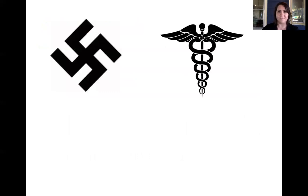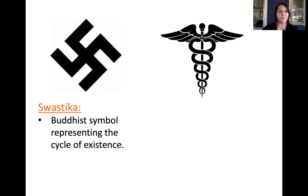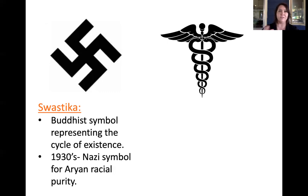Here are two symbols to illustrate what cultural context is — you may recognize one more than the other. The one on the left is called the swastika. In contemporary visual culture, it's most commonly associated with the Nazi Party of the 1940s, but it didn't always start out that way. It started out as a Buddhist symbol representing the cycle of existence, and was co-opted in the 1930s by the German Nazi Party. That changed its meaning — if you were viewing this symbol pre-1930s, it would mean something different. Sometimes historical events change the reading of an icon.